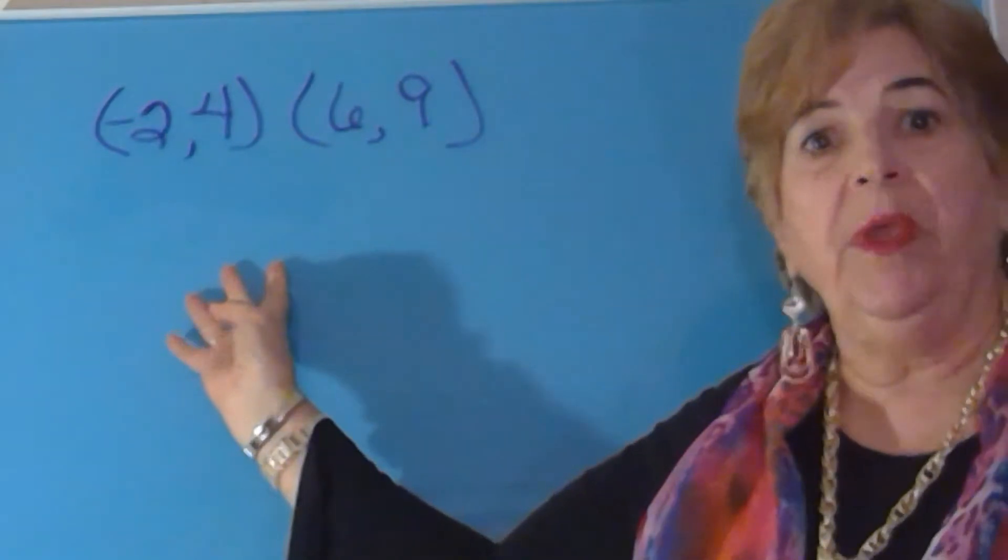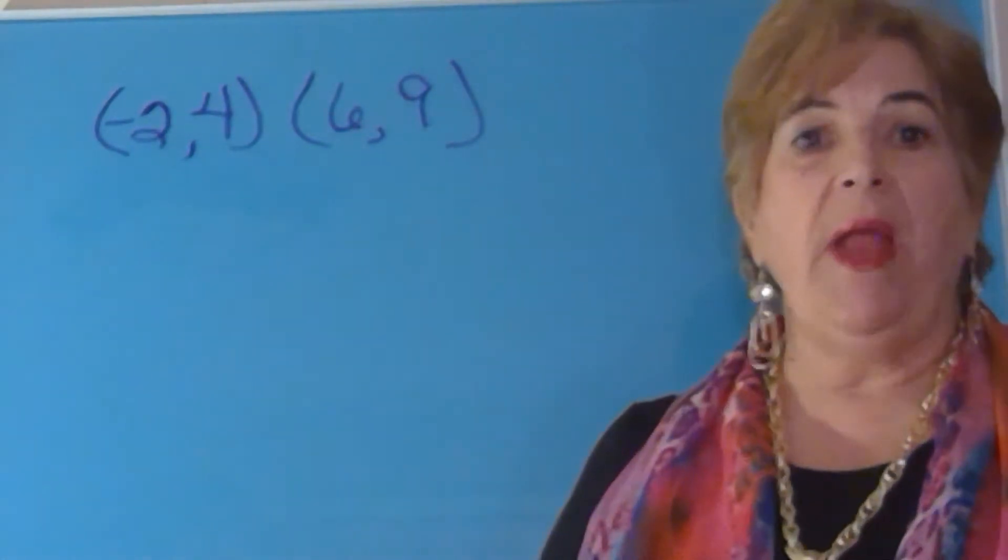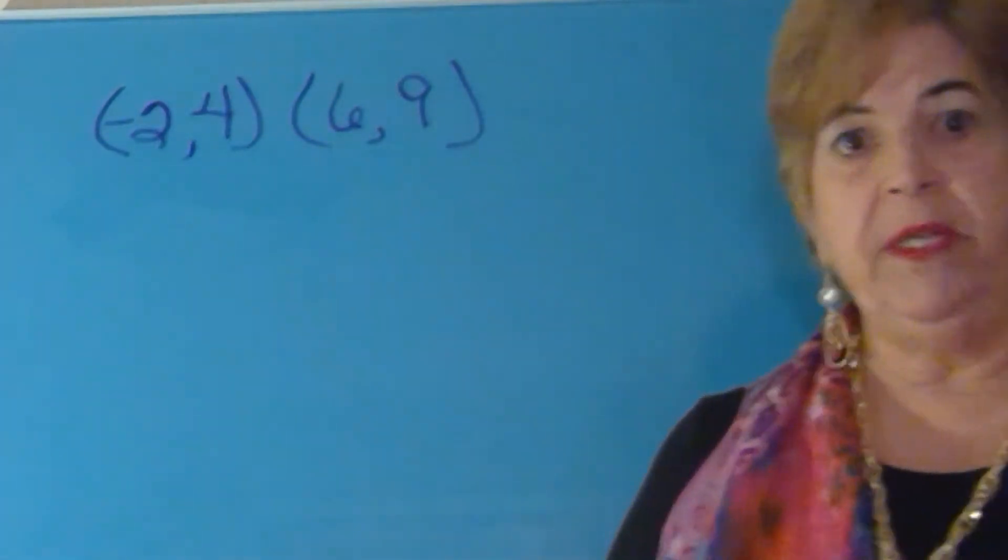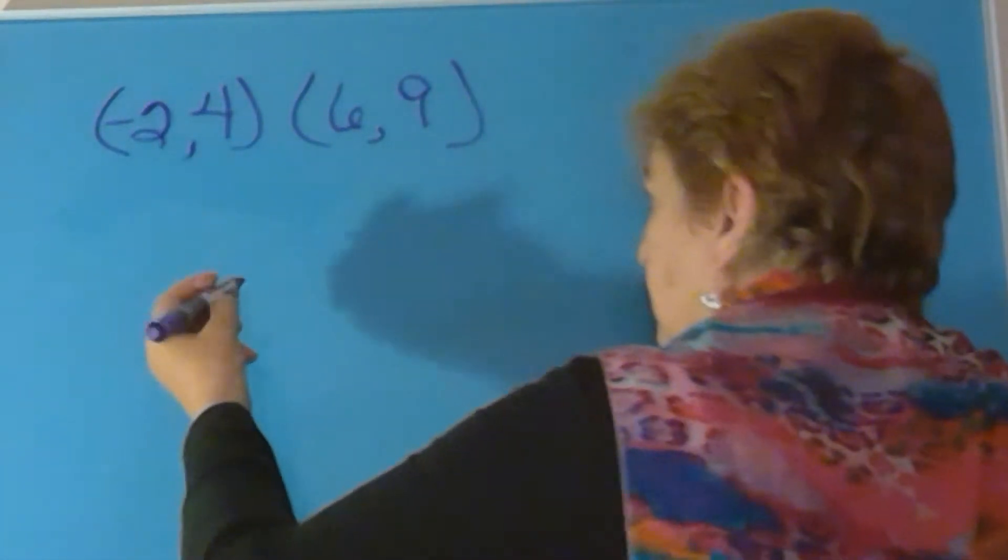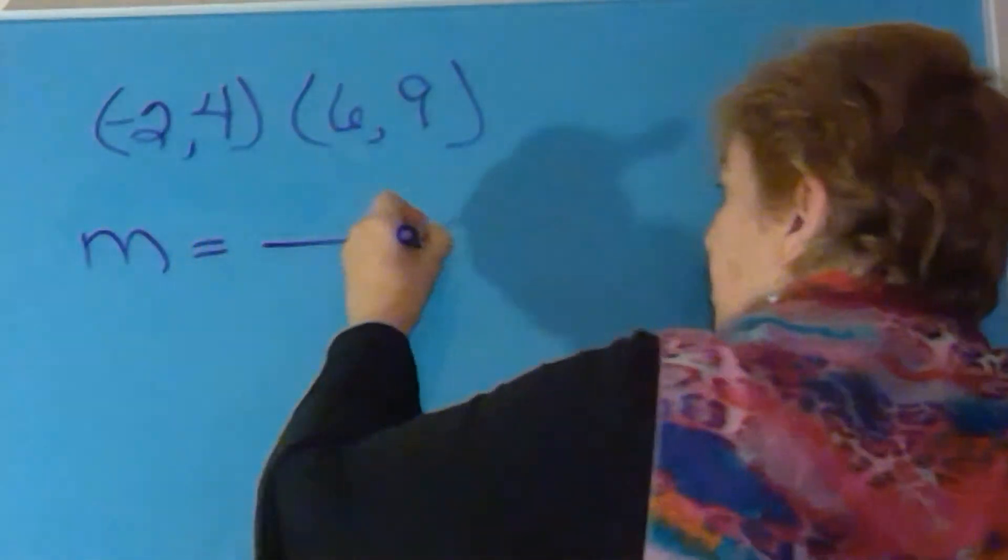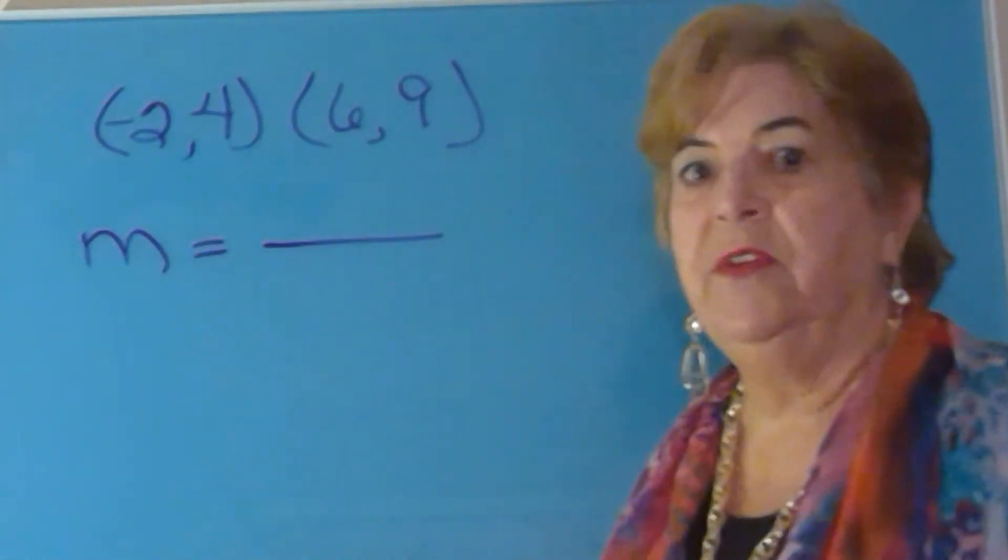In the first problem, you were given two points and you were asked to find the slope of the line that went through those two points. The majority of you had no difficulty with this.